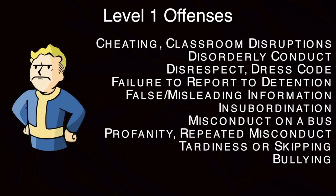Misconduct on a school bus, profane language, repeated misconduct, tardiness, unauthorized absence from class or school — that is also skipping — other, and unsubstantiated bullying. Those are your level 1 offenses.